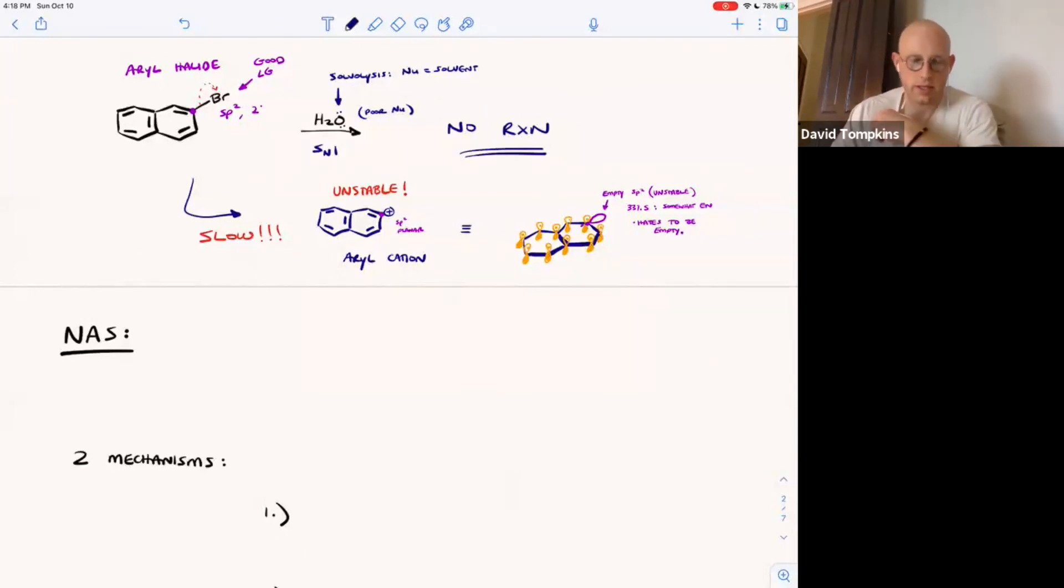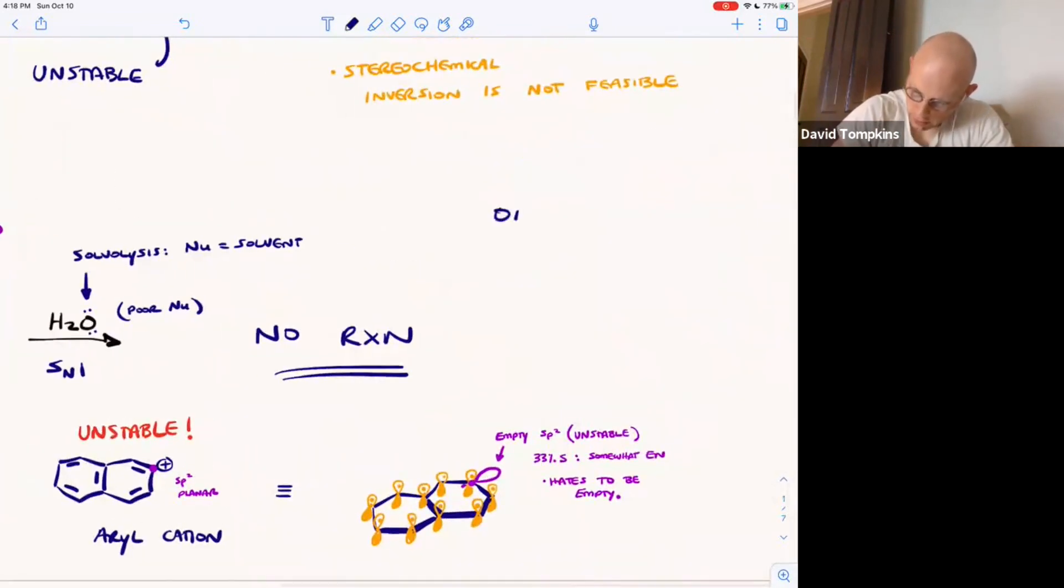So we just say that no SN1 occurs at an SP2 hybridized carbon. These typical substitution mechanisms, SN1 and SN2, only occur at carbons that start out as SP3 hybrids.